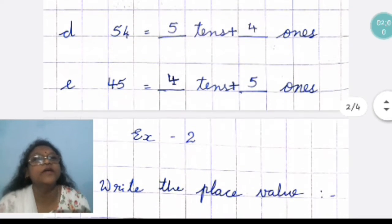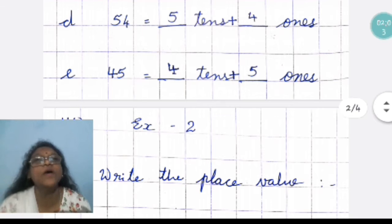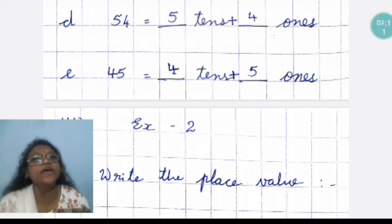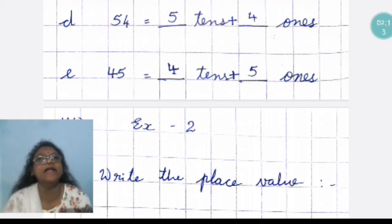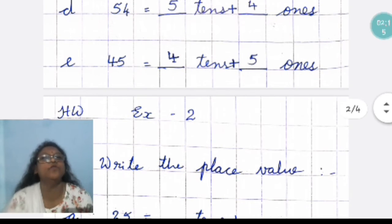This is 54. In 54, which number is ones? Can you tell me? 5 or 4? Right. It is 4. 4 we will write on the right side. That is ones and 5 on the left side.